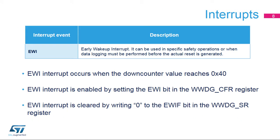The early wake-up interrupt can be used to perform emergency tasks before the reset occurs, such as data logging, data protection, watchdog refresh in order to prevent the reset, or other emergency tasks. The EWI interrupt occurs whenever the down-counter value reaches 0x40. It is enabled by setting the EWI bit in the WWDG CFR register. The EWI interrupt is cleared by writing 0 to the EWIF bit in the WWDG SR register.